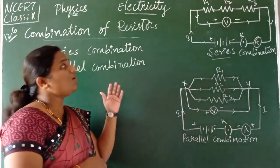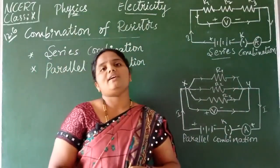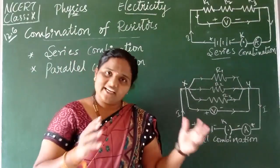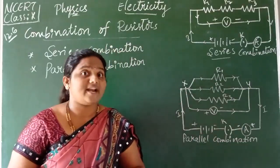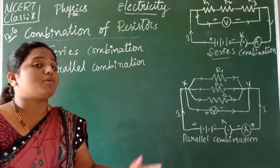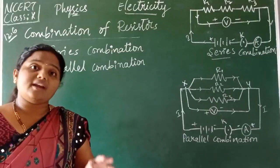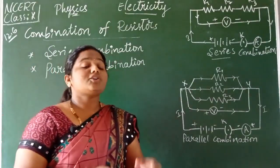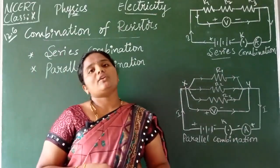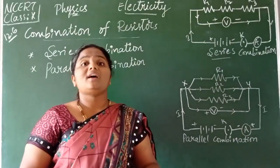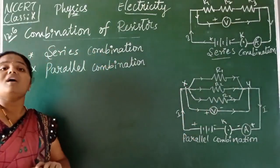In today's class we will discuss the combination of resistors. Up to now we have studied simple electrical circuits — a conducting wire with a battery, plug key, and ammeter connected. But today's topic is combination of resistors. When two or more resistors are connected or joined together, that pattern is called a combination of resistors. In various electronic gadgets and components, we need to make combinations of resistors.